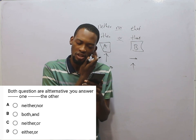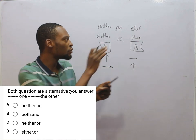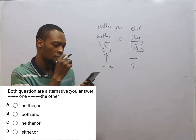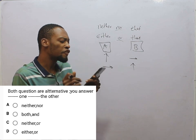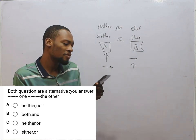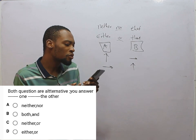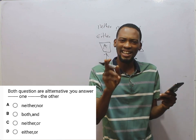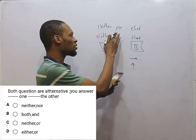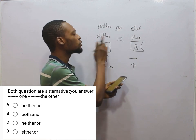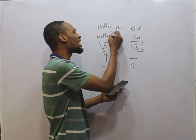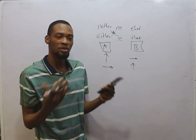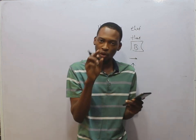Option D is the correct option. Option A is wrong because we are told to answer at least one, so neither will not come in — neither is when you don't need to answer any one of the two. Both is wrong because if you are to answer both, it won't be alternative. Option C pairs neither with or, but neither only goes with nor, and either only goes with or — they don't work together. So option D is correct.